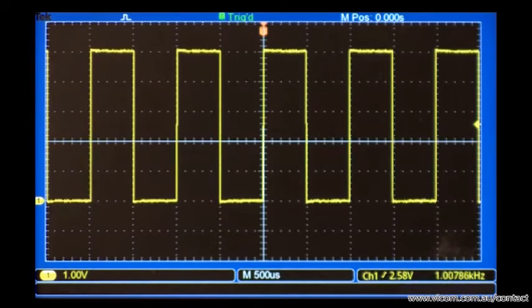The signal is also 5 divisions high, so we can multiply 5 times 1 volt to get the amplitude of 5 volts.